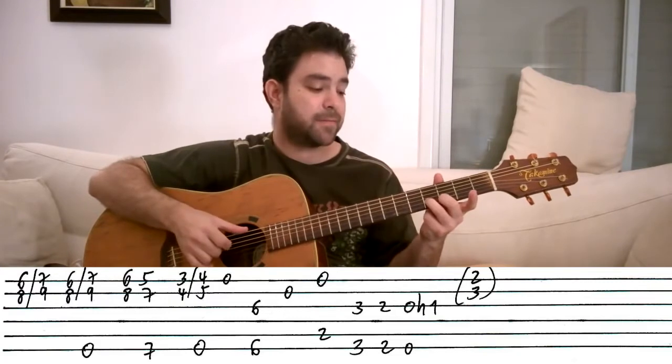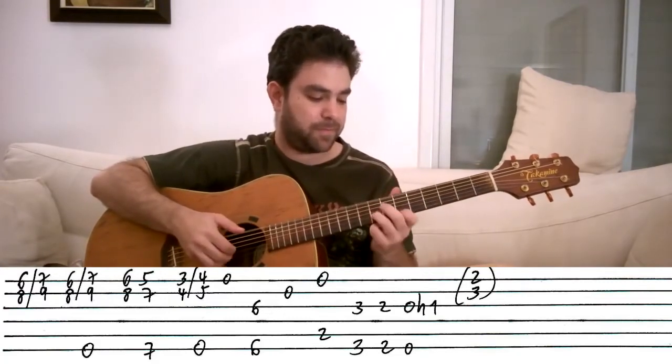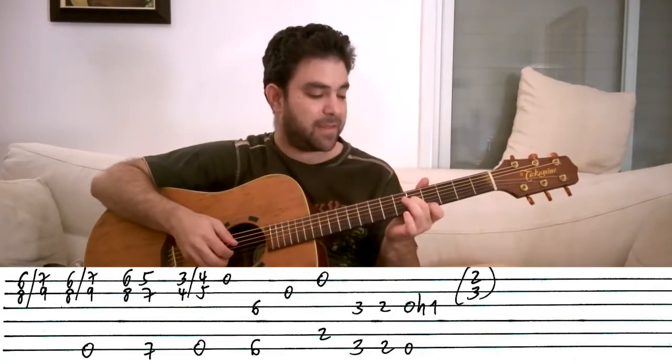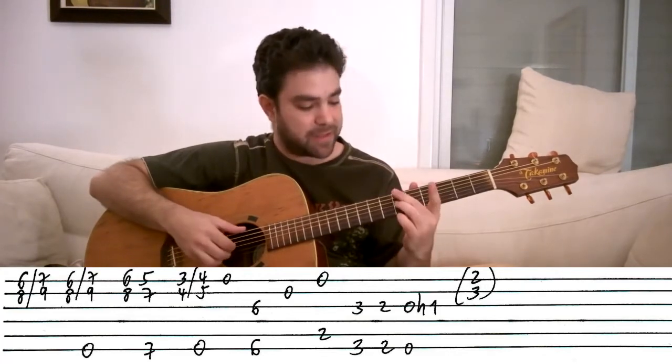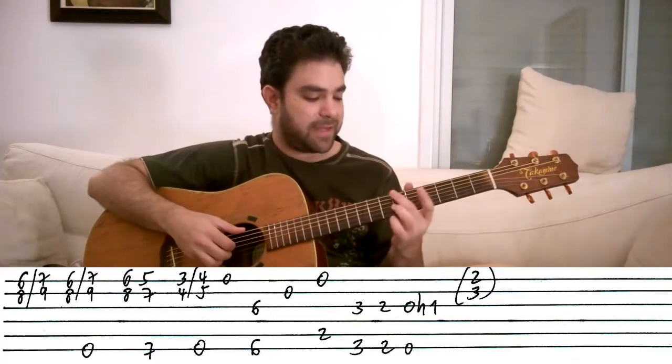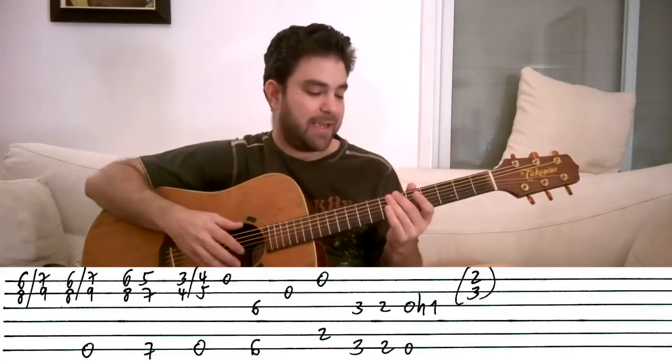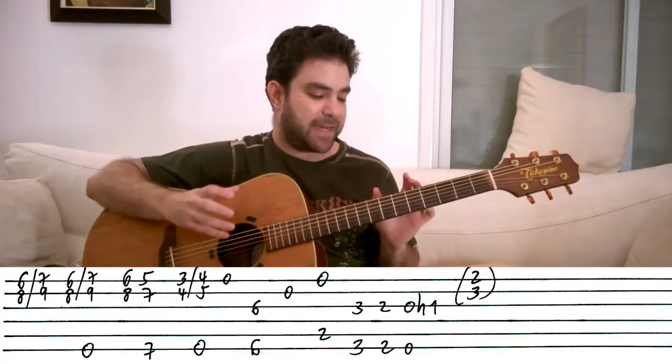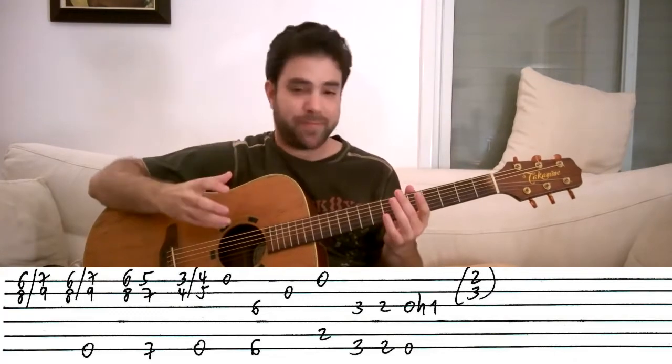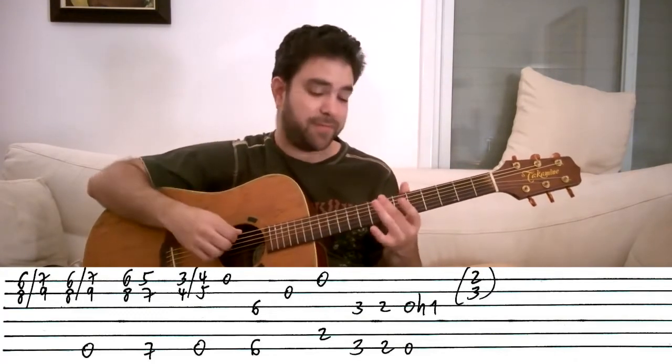Right, like this. So we get this, and then the open E string, and then this. Now, the B flat bass note - without getting too much into theory, the simple explanation is that's the chromatic note from B,